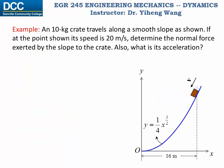Let's look at this example. There's a 10 kg crate traveling down along this smooth slope. Smooth indicates that we don't have to consider friction. If at the point shown it has a speed of 20 m/s, we need to determine the normal force exerted by the slope on the crate, as well as its acceleration at this point. We're going to use the normal and tangential components to solve this problem, so we first need to set up our coordinate system. The tangential axis is always tangent to the slope and pointing towards the direction of motion, and the normal axis is always perpendicular to the tangential axis pointing towards the center of curvature.